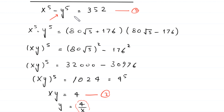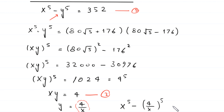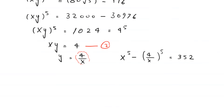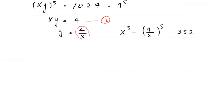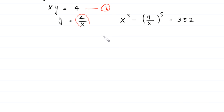Substituting y equals 4 over x into equation number one, that equation becomes x to the power 5 minus (4 over x) to the power 5 equals 352. Now we suppose that x minus 4 over x equals a.